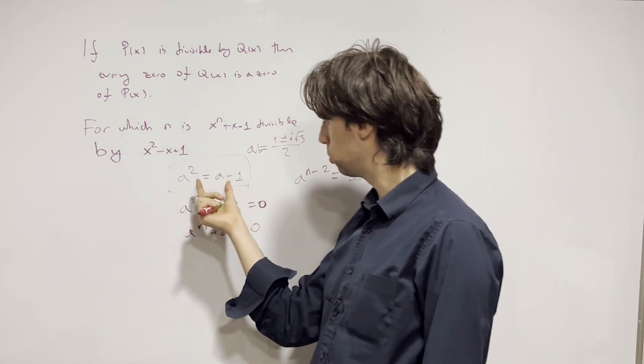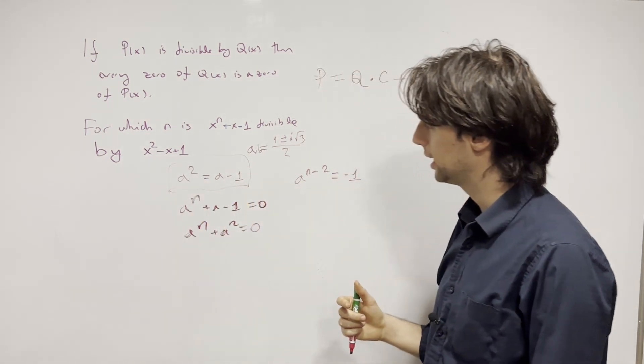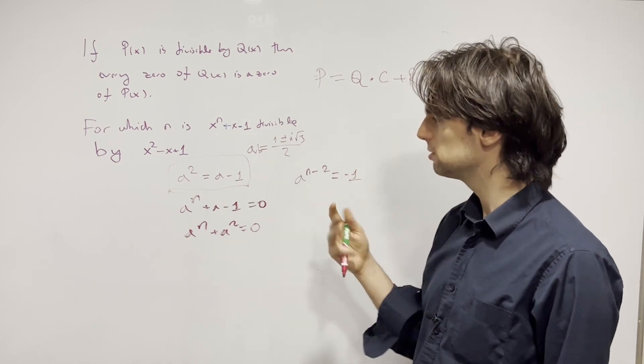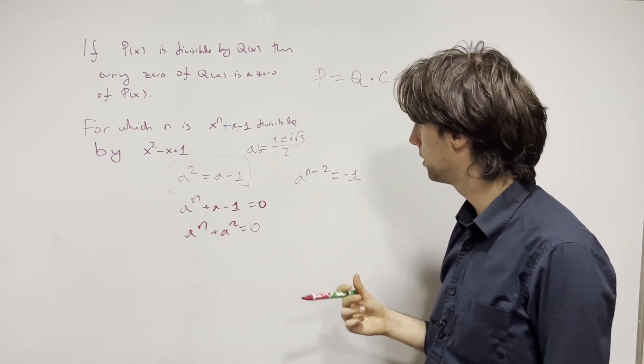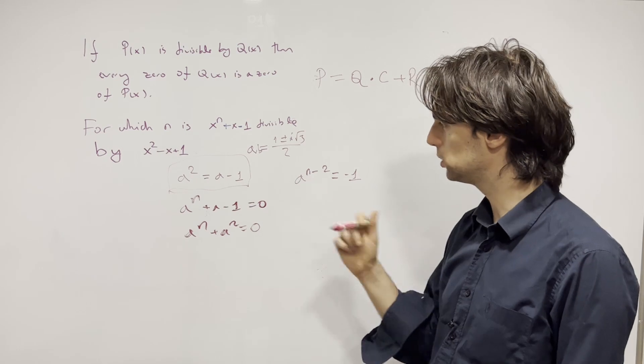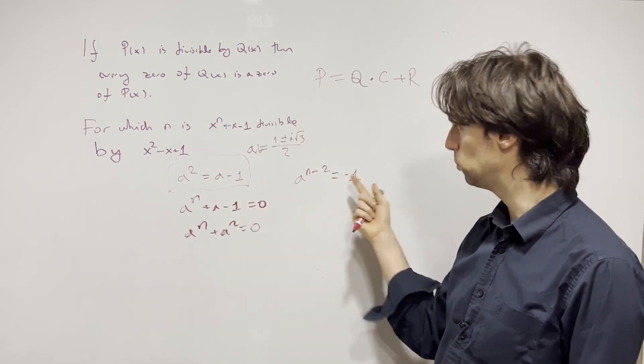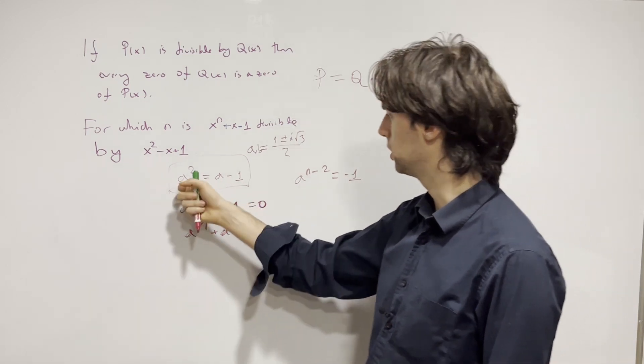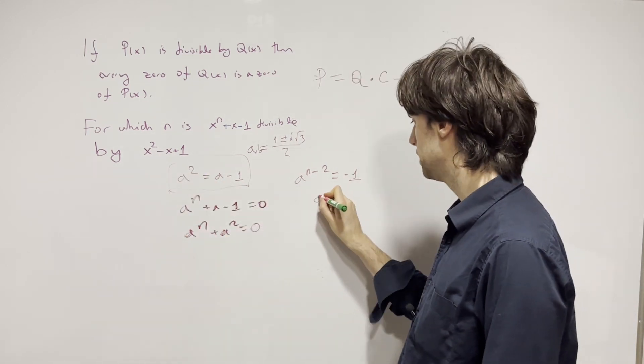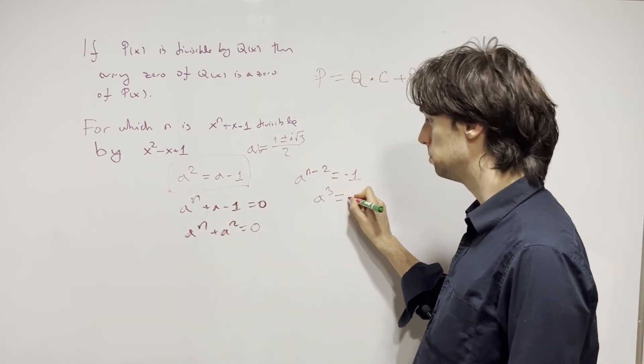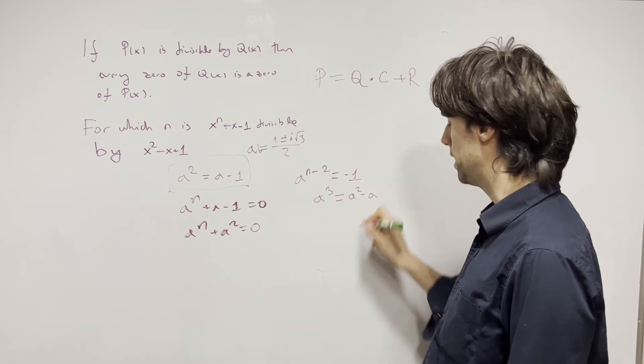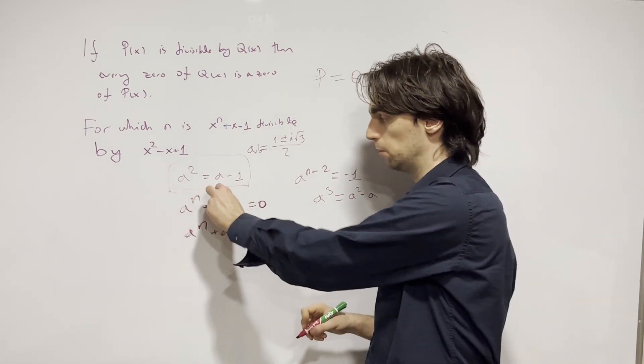So this equation is not the best to work with. There are two ways we can actually modify this equation. One is to multiply both sides by a, and we get that a cubed is a squared minus a.